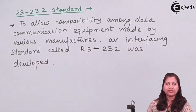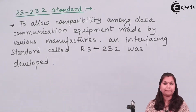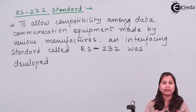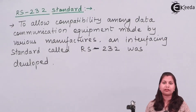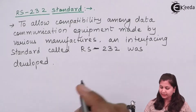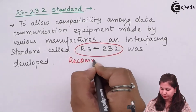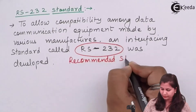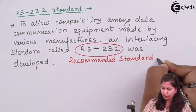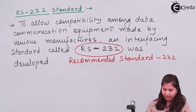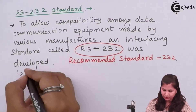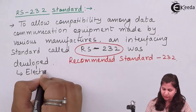The need of RS-232 is to allow compatibility among the communication links, so that every manufacturer will use only this standard for interfacing microcontrollers and microprocessors with the peripheral devices. This standard RS-232 — its full form is Recommended Standard 232 — was developed by the Electronics Industries Association, EIA.